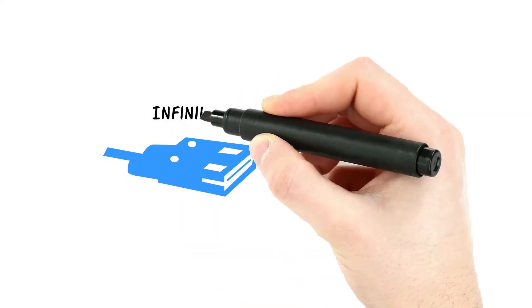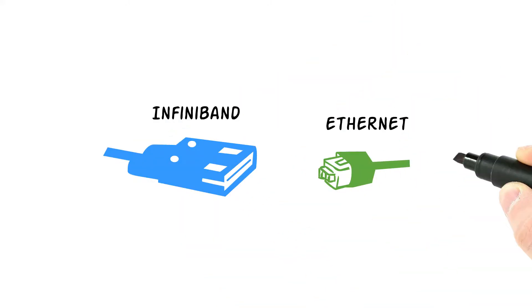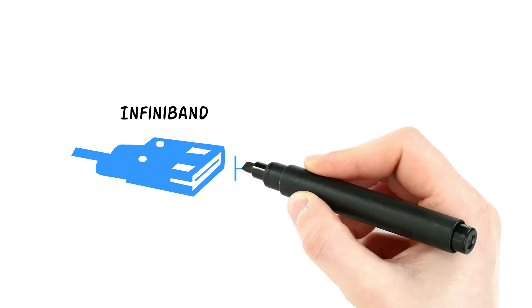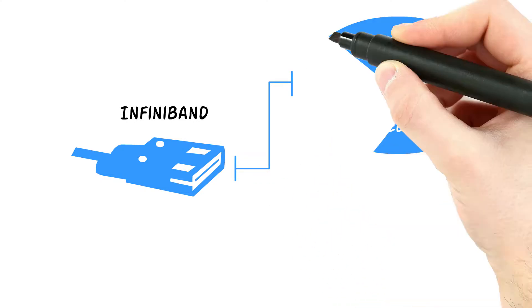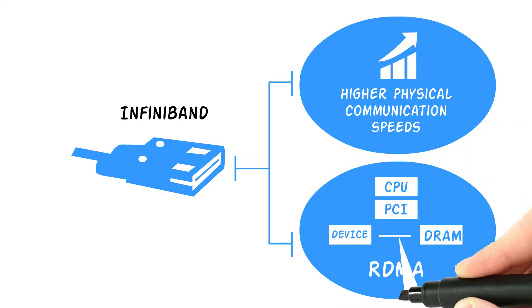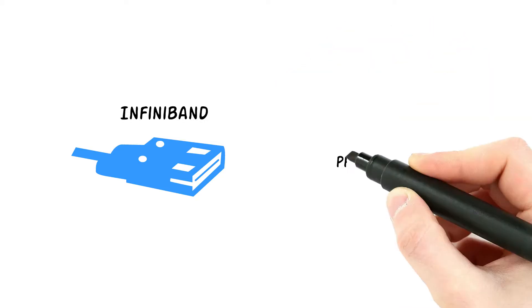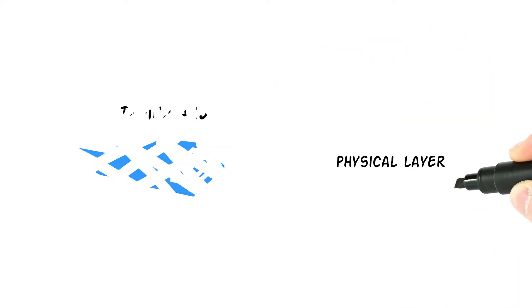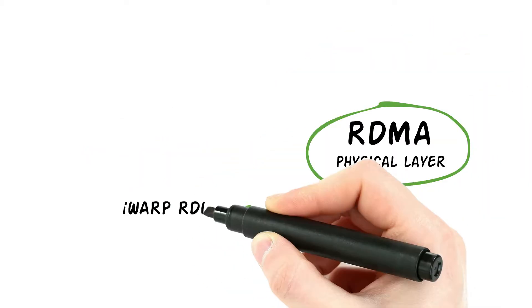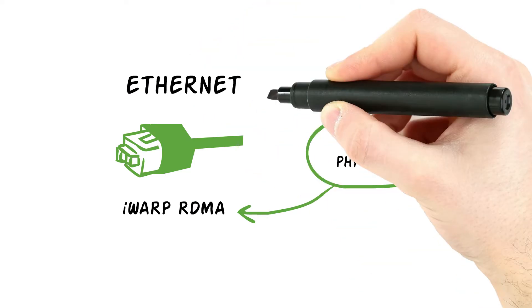Infiniband has enjoyed an advantage over Ethernet as a cluster fabric, thanks to higher physical communication speeds and remote DMA. Now, using the same physical layer as Infiniband, iWarp RDMA provides a competitive Ethernet alternative.